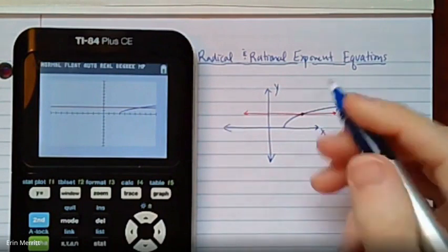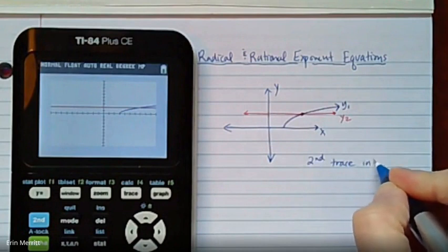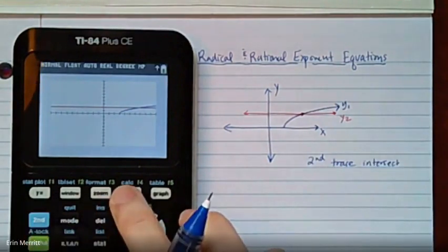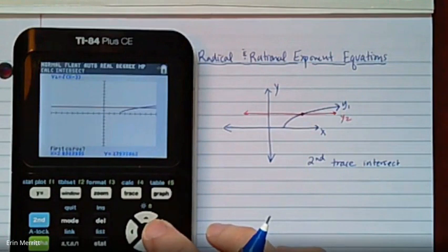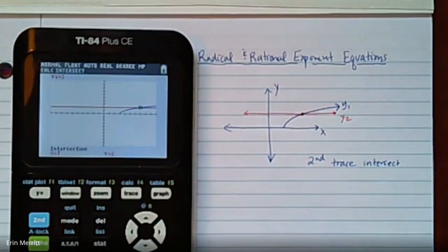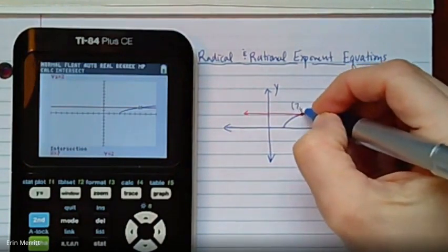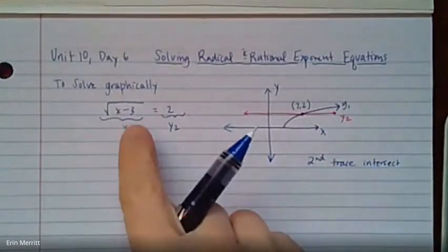And any time we graph to solve, we know we're looking for the intersection point as our solution. So if I do second, trace, and then intersect, that will locate that point for us. This is where we get as close as we can, and hit enter, enter, enter. And so I'm coming up with the intersection point of 7, 2.